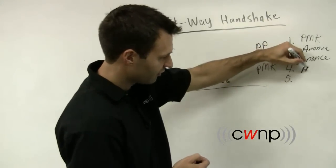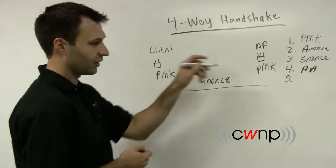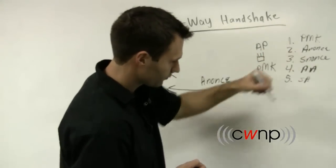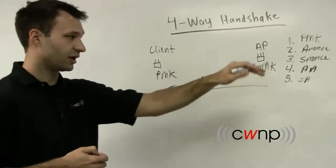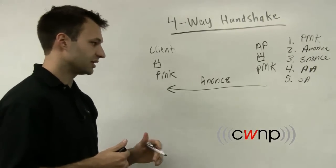The authenticator address, AA, and then the supplicant address, SA. So these are the five inputs that are used to create the encryption keys.